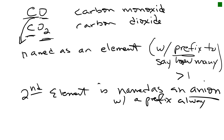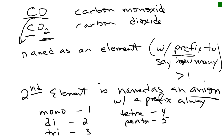Carbon monoxide has one carbon and one oxygen; carbon dioxide has one carbon and two oxygens. Our prefixes are: mono for one, di for two, tri for three, tetra for four, penta for five, and hexa for six. That can go higher, but you don't need to go past six.